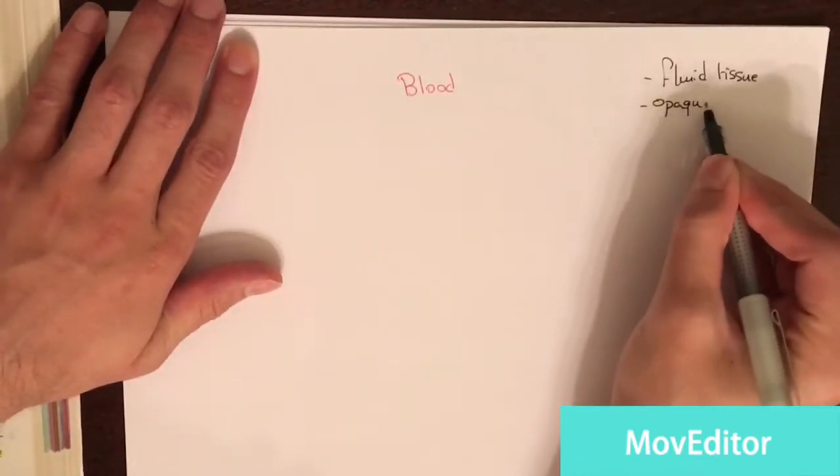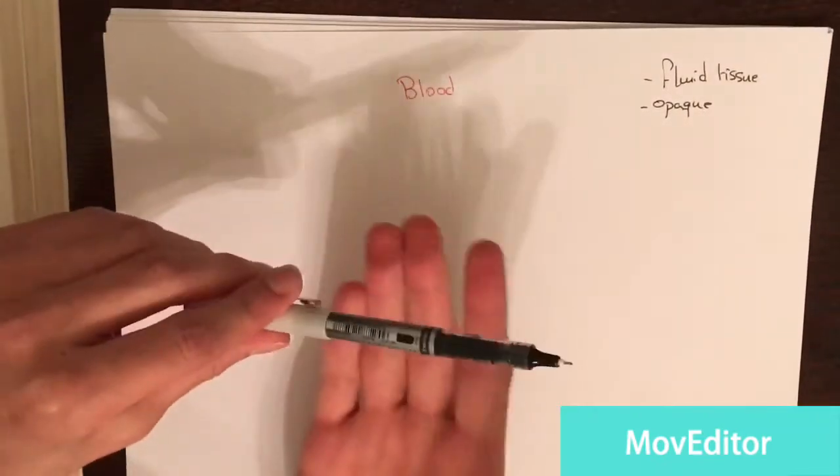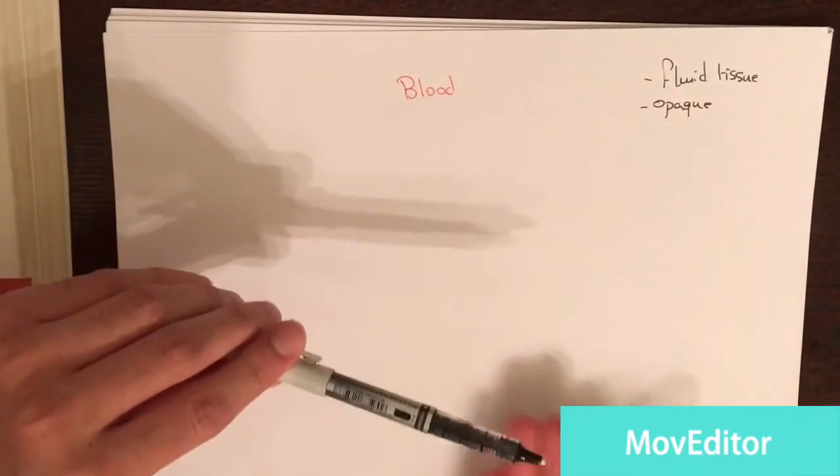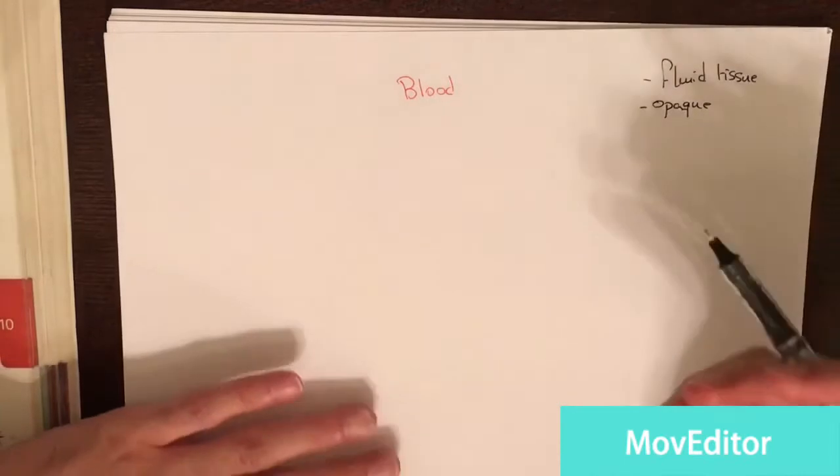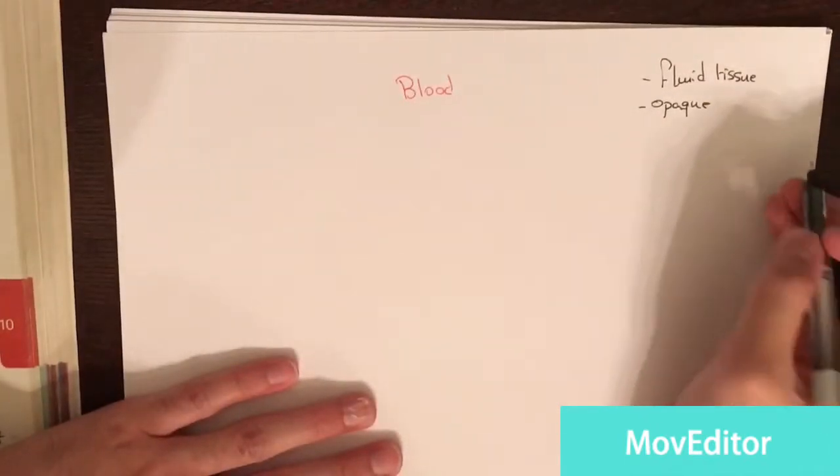Opaque means it is not transparent. For example, if you put something under blood, you won't be able to see the thing that is under it. Opaque means غير شفاف.